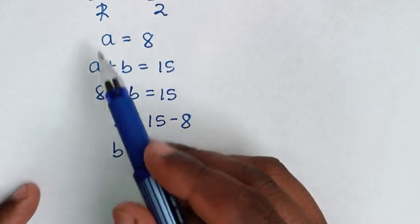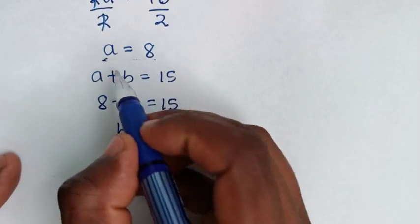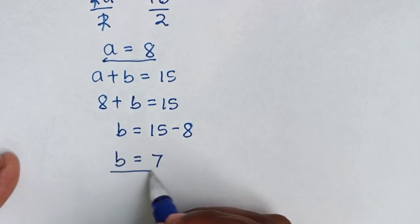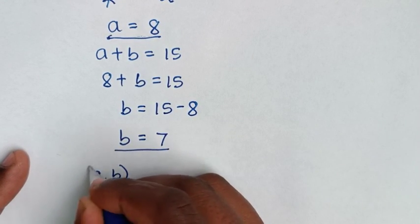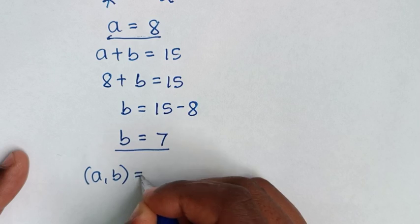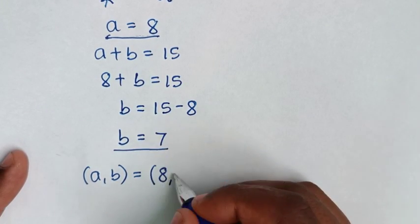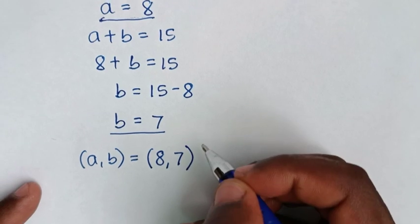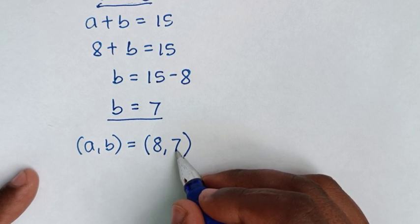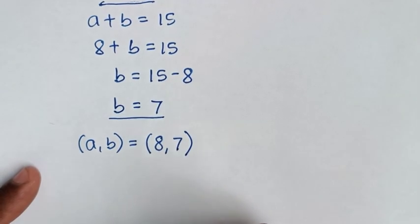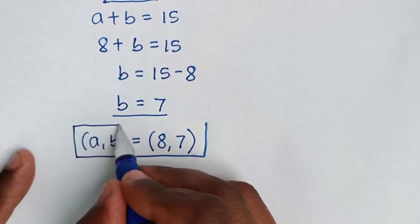So for the first solution, a equals 8 and b equals 7, meaning a comma b equals (8, 7). Since 8 and 7 are both natural numbers, this is a valid first solution.